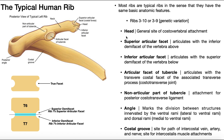To start out with, we have the head of the rib. The head is going to be the more posterior attachment on the vertebra — this is the general site of the costovertebral attachment. When we say costovertebral, the vertebral implies that one part of the attachment is the vertebrae, and costo means rib. So this part over here is the head.